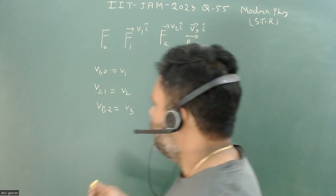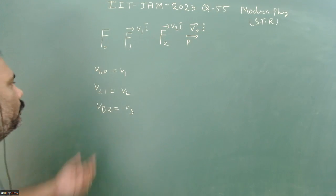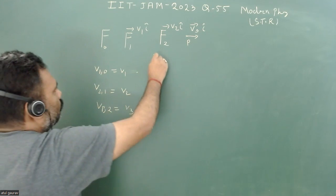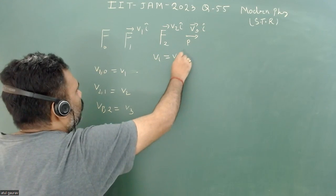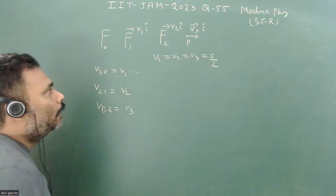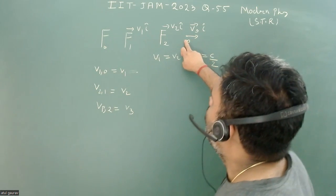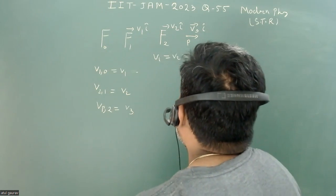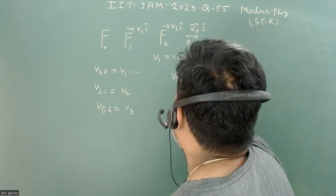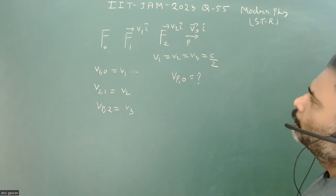It is also given that the magnitude of all speeds is c/2, so v1 = v2 = v3 = c/2. What we have to do is calculate the velocity of the particle with respect to F0.